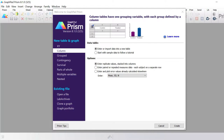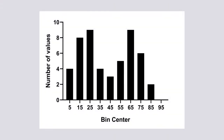Usually a frequency distribution involves the creation of a histogram to visually inspect the distribution of your data, such as the example shown here. The x-axis represents the data being measured, ordered from the smallest to the largest value, placed into what are known as bins. Each bin contains the number of values that lie within the range of values that define the bin. So in this example, the first bin center is 5, meaning that column contains all values between 0 and 10. The y-axis represents the number of values in each bin.